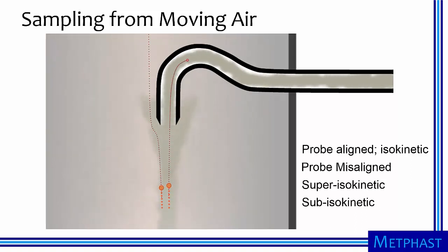Conversely, in subisokinetic sampling, the velocity of air entering the probe is lower than that in the stack. Here, the inertia of large particles causes them to be oversampled.